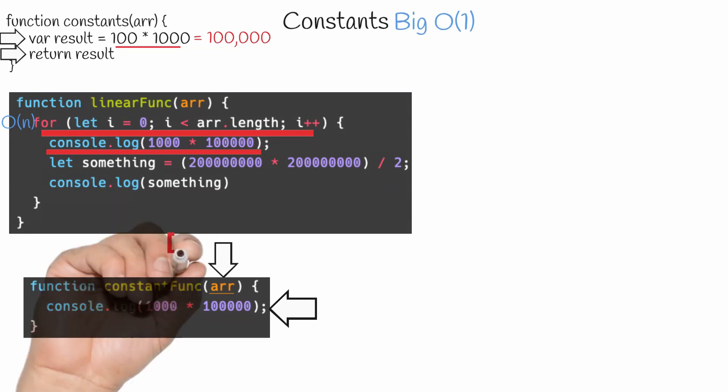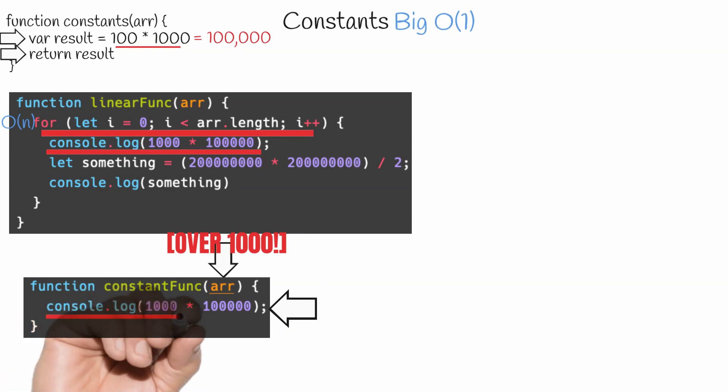So regardless of how large of an array is passed to this function, this line always produces the same result. And this is the only line in the function. So therefore, this entire function is O of one.